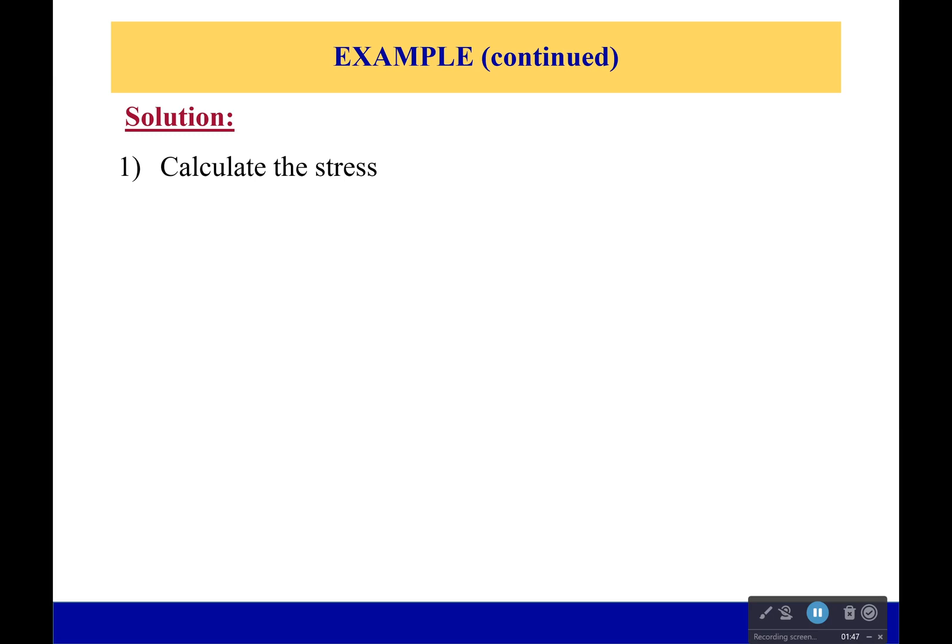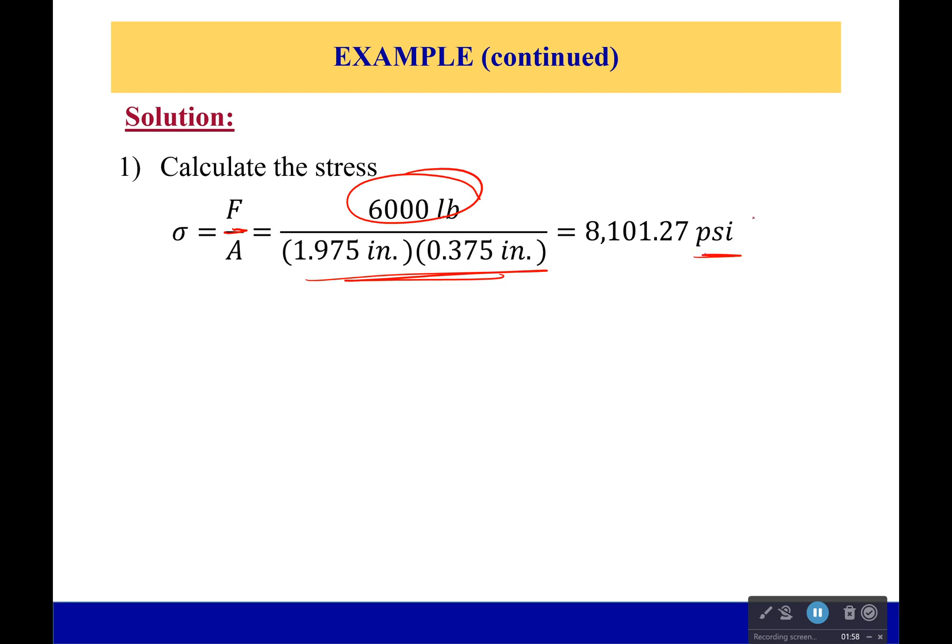First, we're going to calculate the stress. We had a load over a cross-sectional area. Not too difficult. So stress is force over area. We have 6,000 pounds, we have inches squared on the bottom, and so we get PSI, which if you didn't know that, it's pounds per inch squared. It comes out to be 8,101.27 PSI.